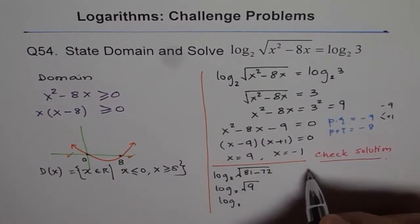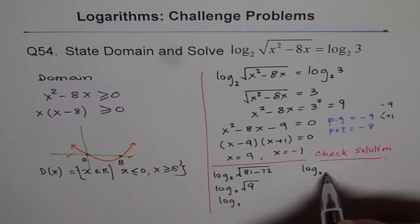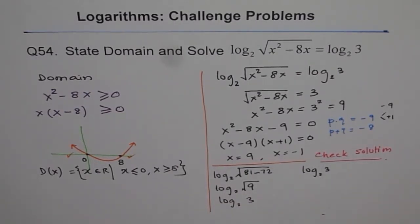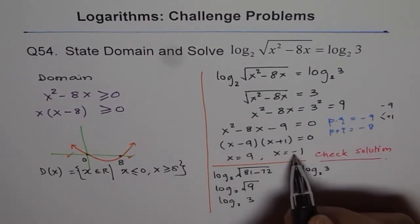Well, this side is already log 2 of 3, right? So, well, square root of 9 is 3, so that's perfectly fine. It matches. So, we get left side equals right side. So, it works. Now, let's check minus 1.